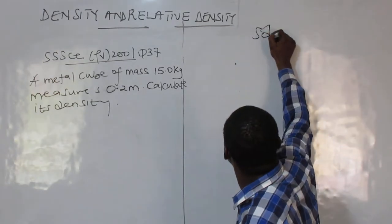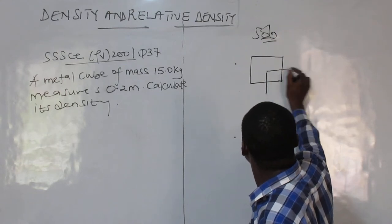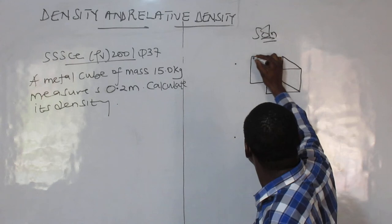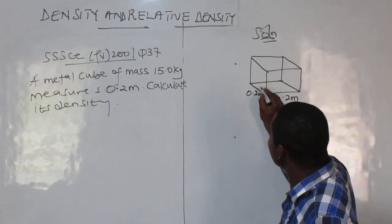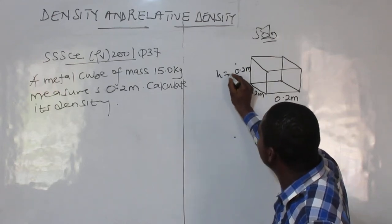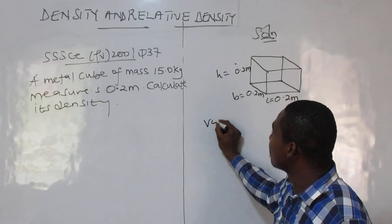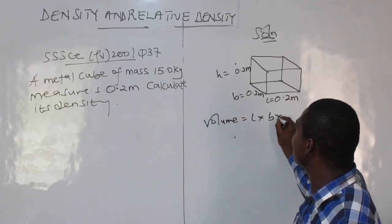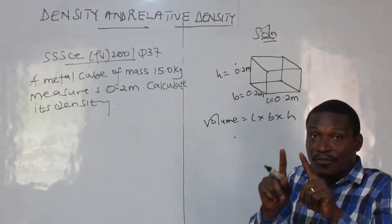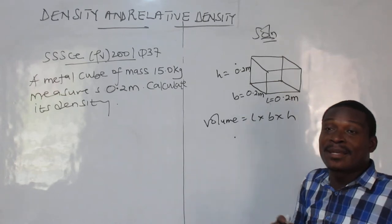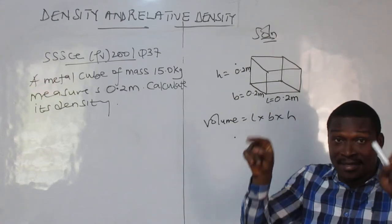So why don't I draw my cube. So it measures 0.2 meter. So 0.2 meter here, 0.2 meter at the width, 0.2 meter also the height. So there is height, there is breadth, and there is length. So it means I can get my volume from this. Length times breadth times height. Please always take note. A cube has all sides equal. That is a cube. A rectangle will have two opposite sides equal. But for cube it's the same. It's a square.